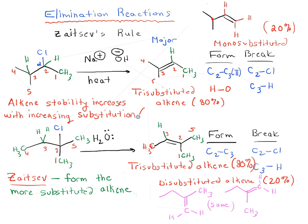And by substitution, we really mean carbon versus H. So as we replace hydrogens with carbons directly attached to the alkene, we're going to increase the stability of the alkene. And that's Zaitsev's rule. It applies for the elimination reactions.